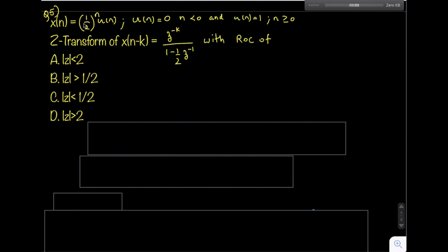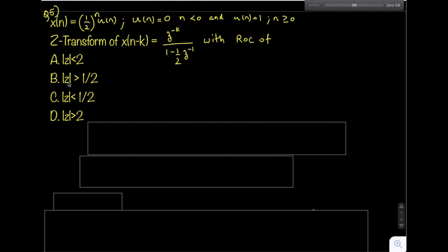Let us solve the next question. x(n) = (1/2)^n · u(n) is given, where u(n) = 0 for n < 0 and u(n) = 1 for n ≥ 0. The Z-transform of x(n-k) is given as z^(-k) / (1 - (1/2)z^(-1)). The ROC of this x(n-k) signal is asked, with options: |z| < 2, |z| > 1/2, |z| < 1/2, or |z| > 2.